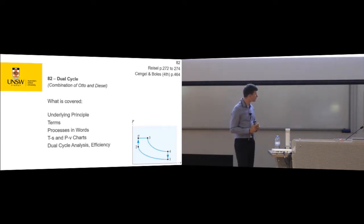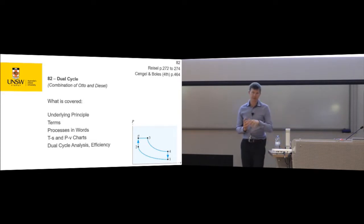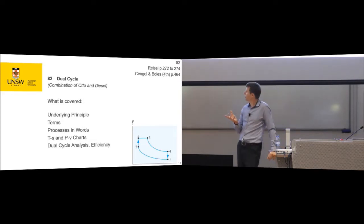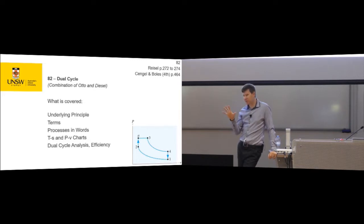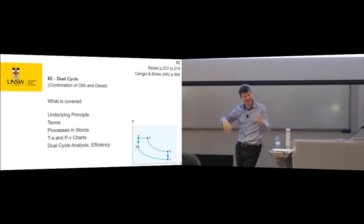Joule cycle then. It's going to take a few minutes. So the Joule cycle comes about because, in truth, the ignition process is neither isochoric nor isobaric, but is somewhere in between.